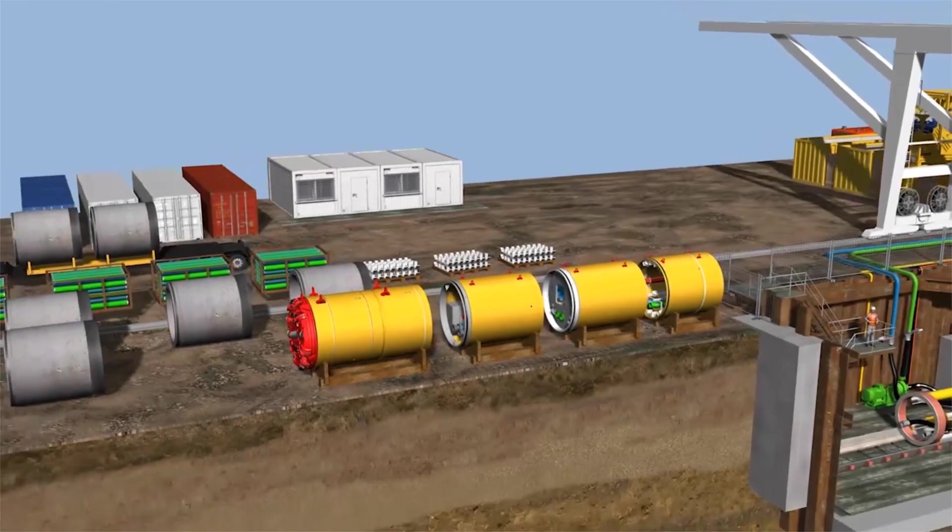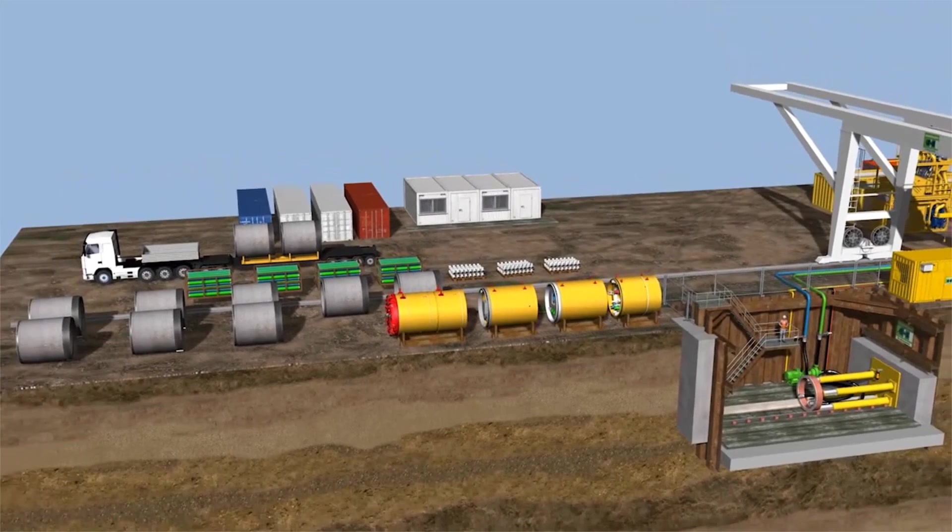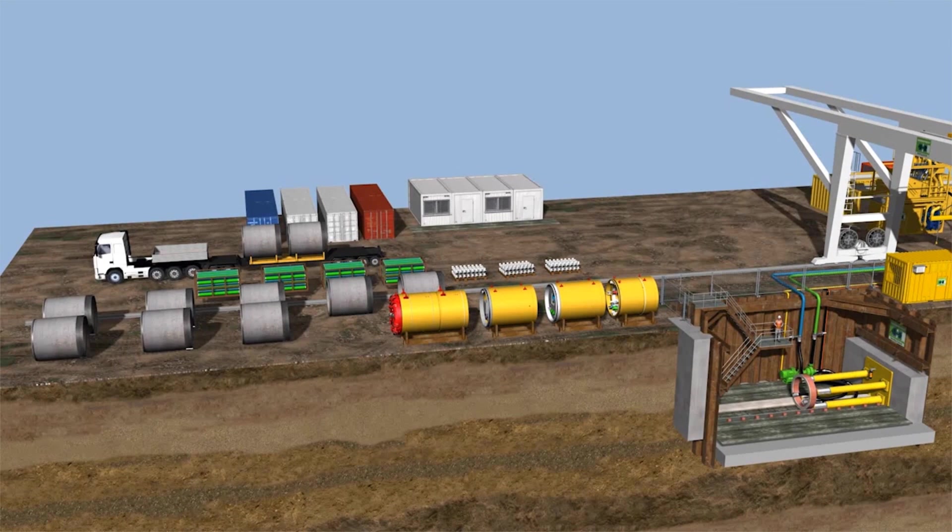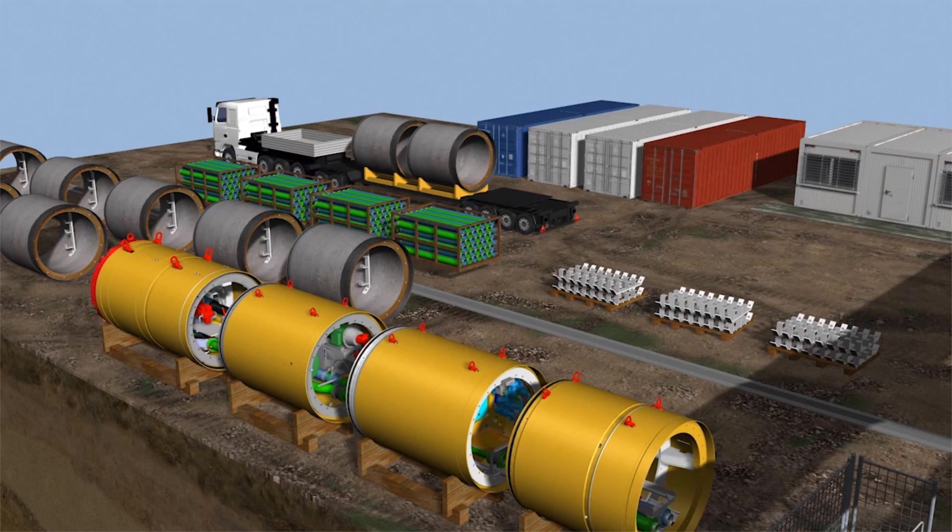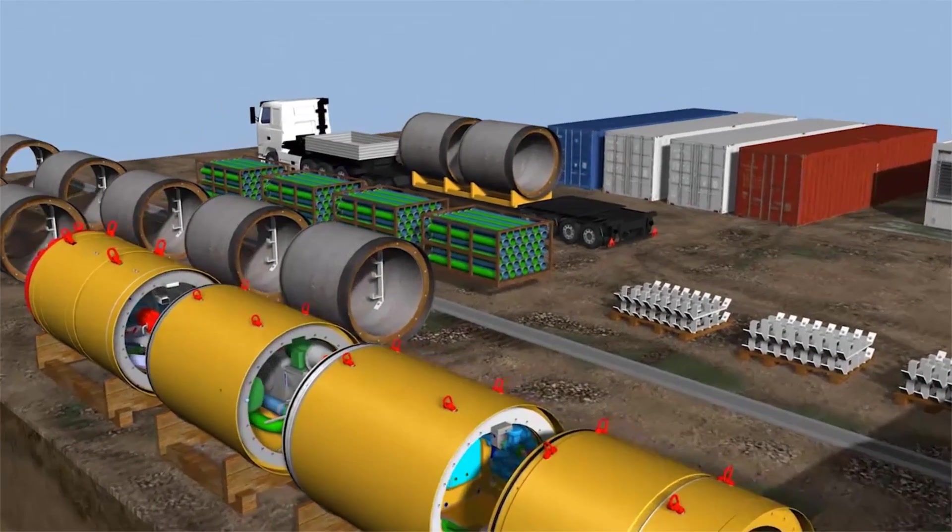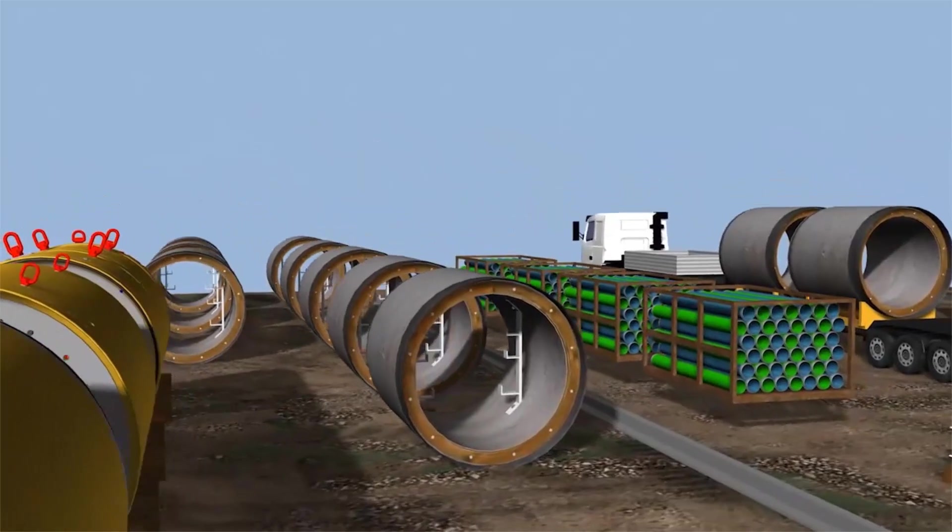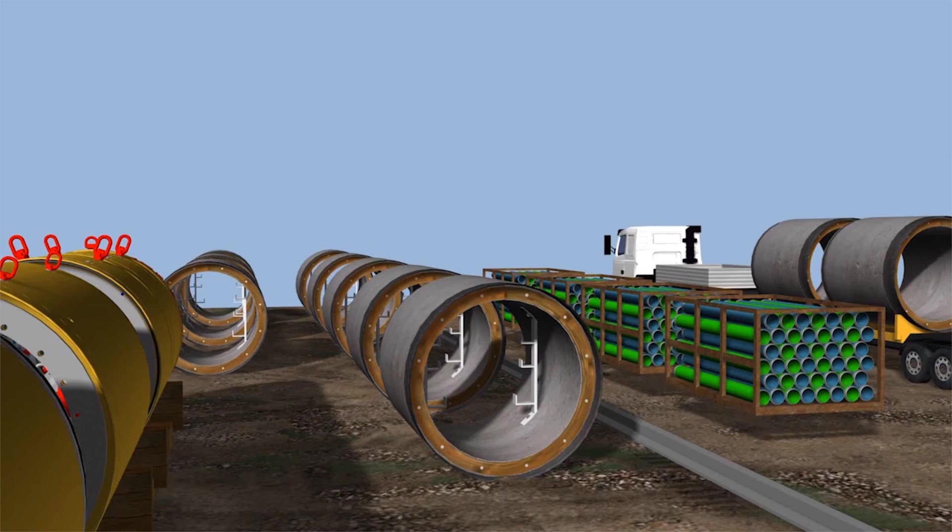The product pipes are delivered by truck, sorted and stored on a firm subsoil. For faster pipeline installation, the pipes are prepared with brackets to accommodate the slurry and feed line.